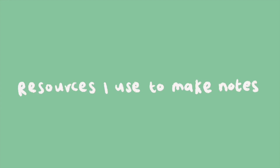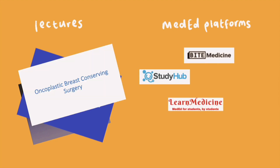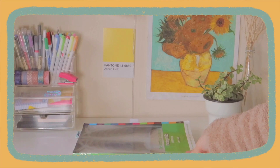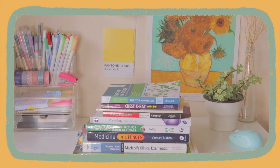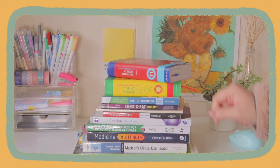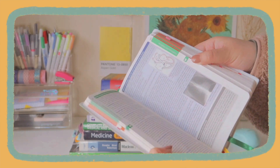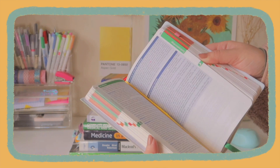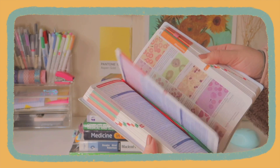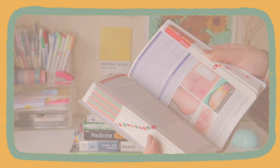To make my notes I use a lot of different resources. I mainly go off lectures provided by my university but also like to tune in to revision sessions held by different med ed platforms. In terms of books, I like to use a few specific ones which I'm showing you here. I want to talk specifically about the Oxford Clinical Medicine Handbook. This book is great because it goes through all the important information you need to know about different diseases, summarises them very well, and it's perfect to carry around with you on placement.